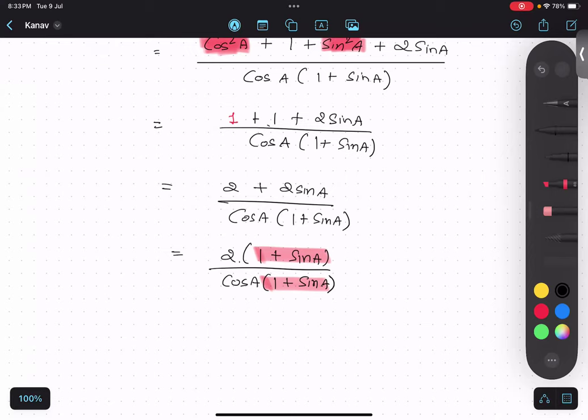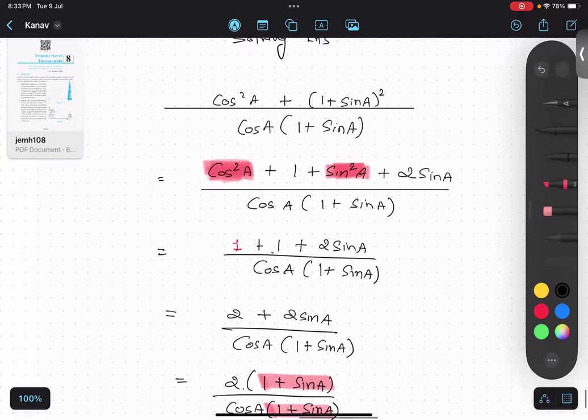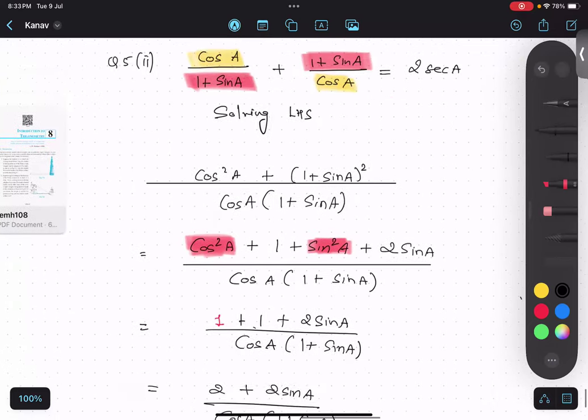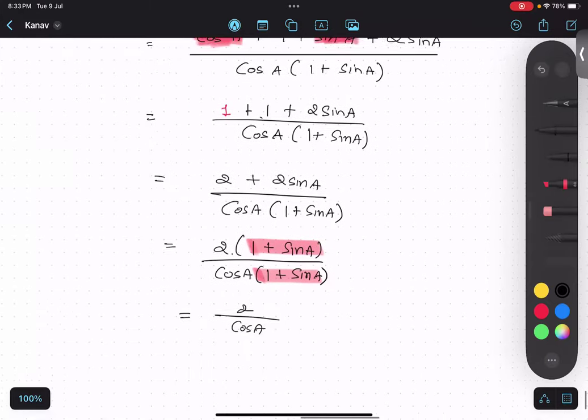2 upon cos A. Now what was asked? Sec. So is there any way I can go to sec? Yes. We can go for - we know that sec is 1 by cos. Sec A is 1 upon cos A. We know this thing.